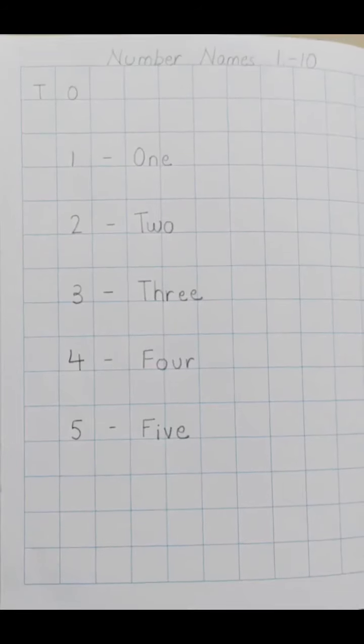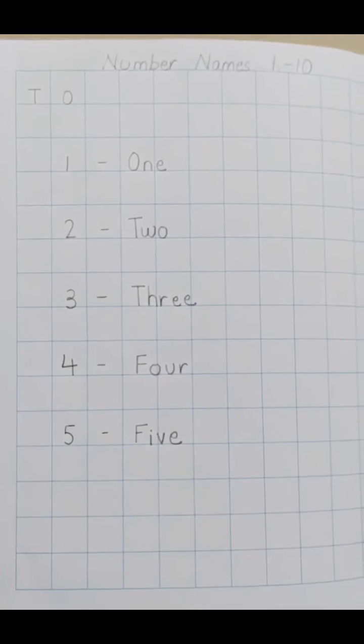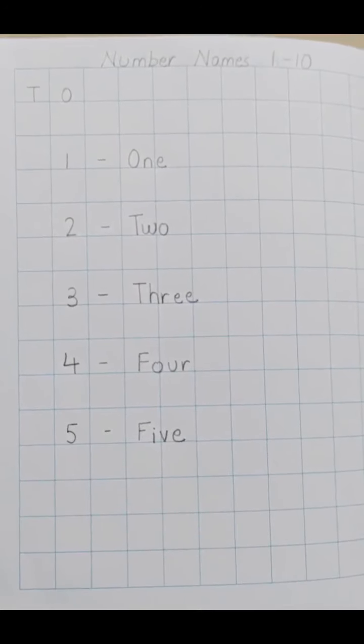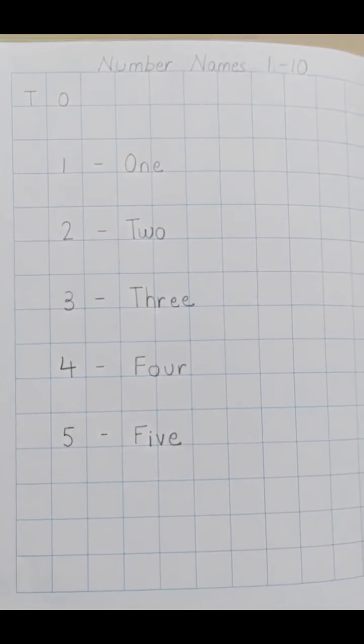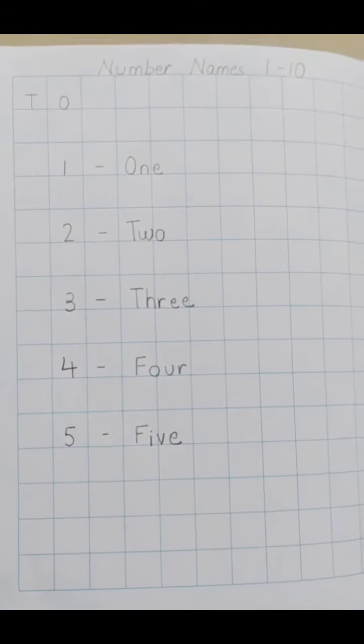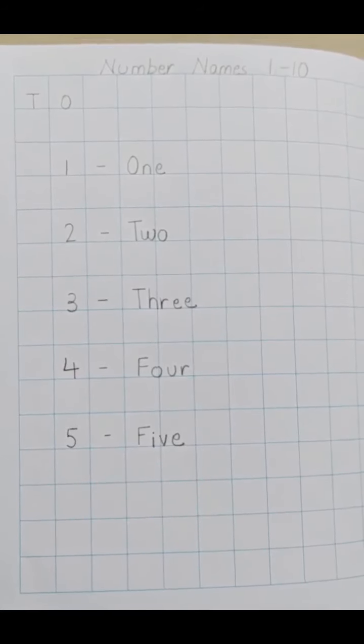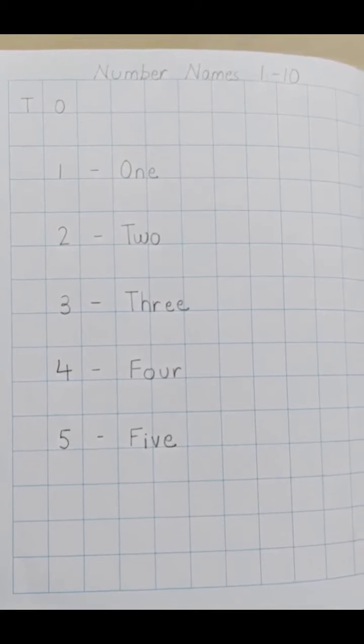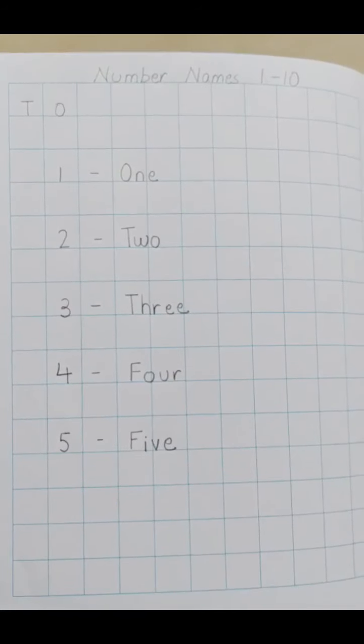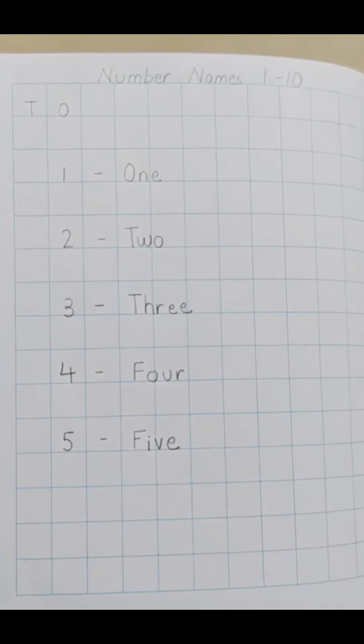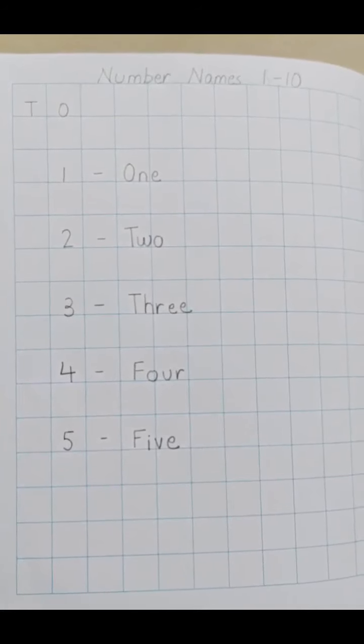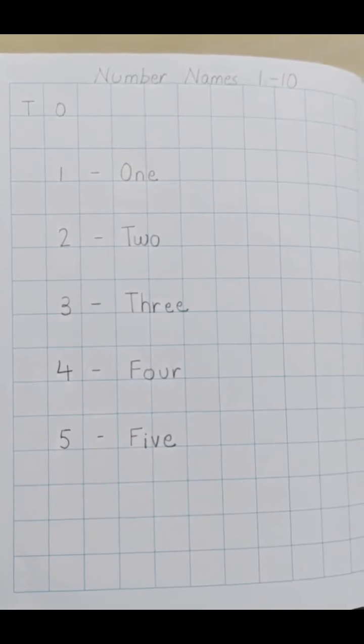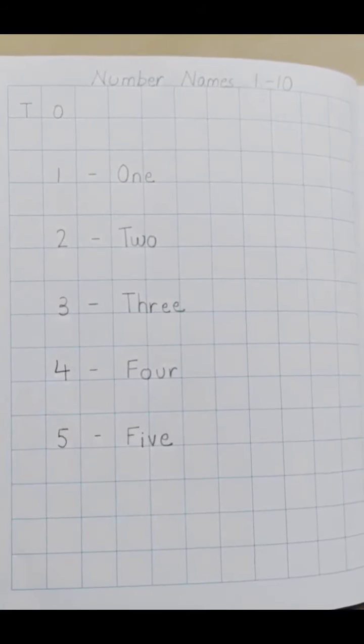Now, we will write. Children, in our pencil time mathematics we will be writing number names 1 to 10 just as I have shown. I have shown it earlier also on the board. Can you see the T and O? Don't forget to write that. And below O you will write all the numbers, give a dash, and then you will write the spellings.